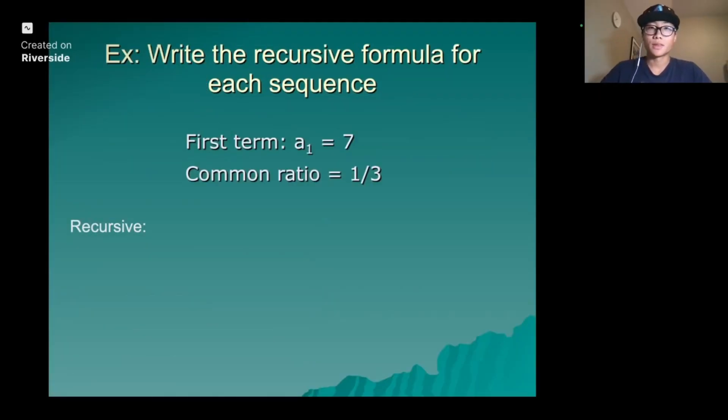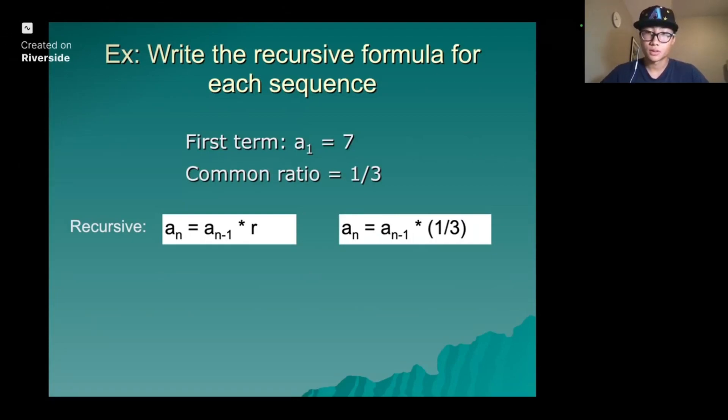Example: write the recursive formula for each sequence. First term, a1 equals 7, common ratio is 1/3. The recursive rule is an equals an minus 1 times r. So here it gives you, you put in the common ratio first, and next, find the first five terms.